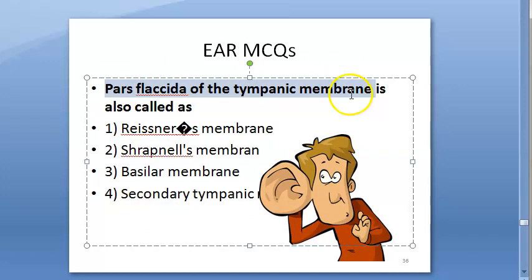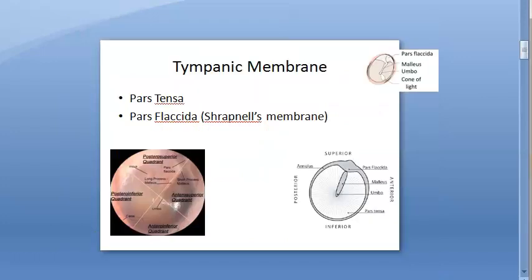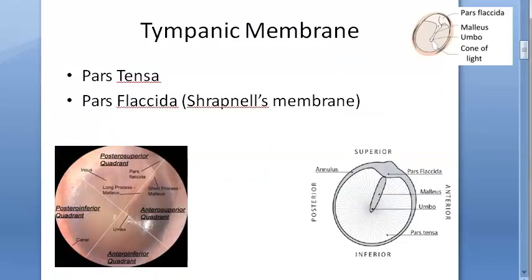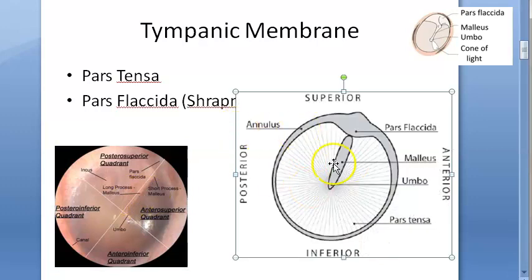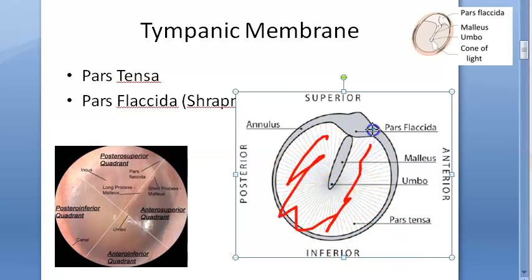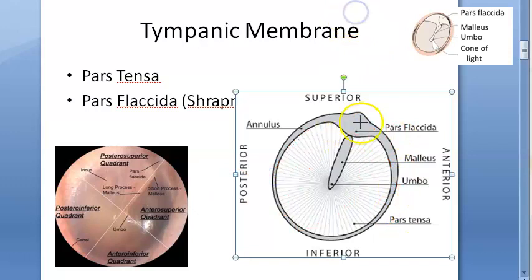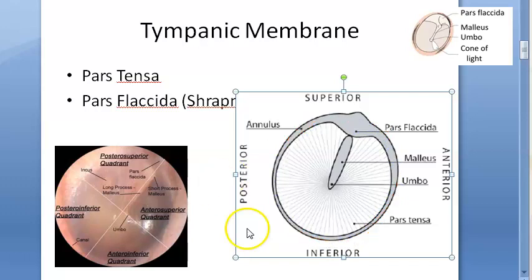Pars flaccida of the tympanic membrane is also called what? The tympanic membrane has pars tensa (the larger part) and pars flaccida. Pars flaccida is also called Shrapnell's membrane.